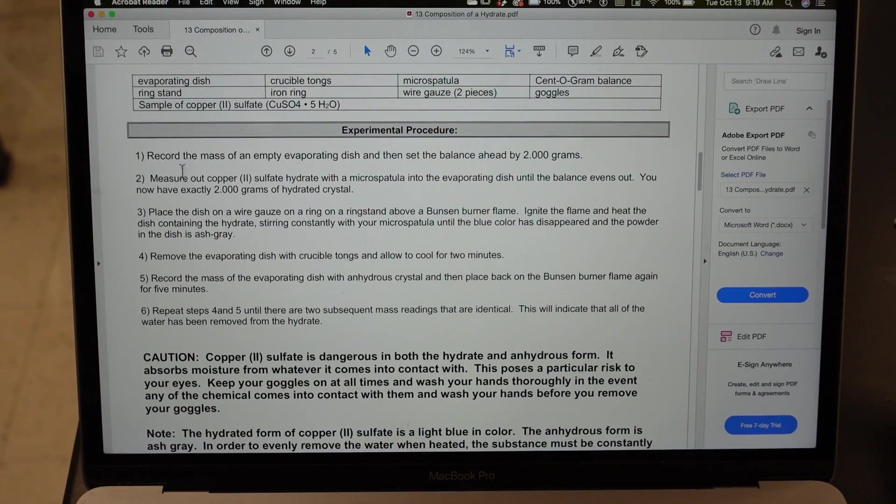So what we're going to do is we're going to record the mass of an empty evaporating dish and then set the balance ahead by two grams. We're going to measure out the copper sulfate hydrate with a micro spatula into the evaporating dish until the balance evens out. You'll have exactly 2.000 grams of hydrated crystal.